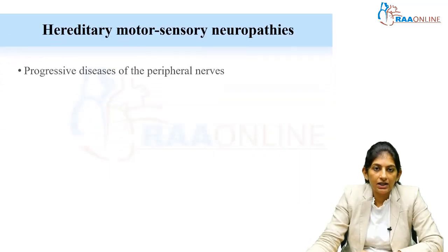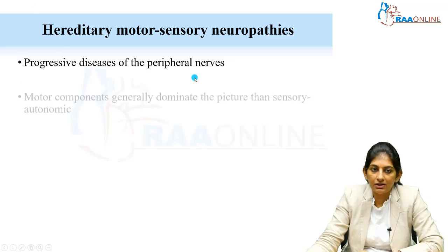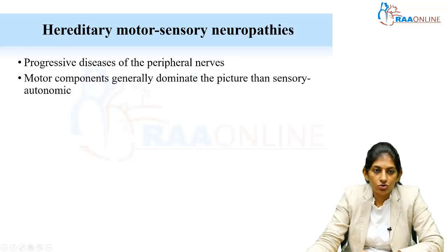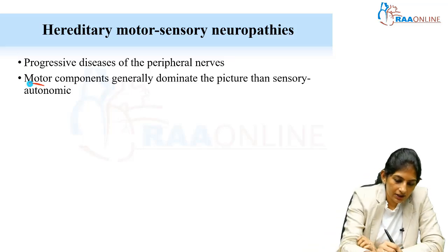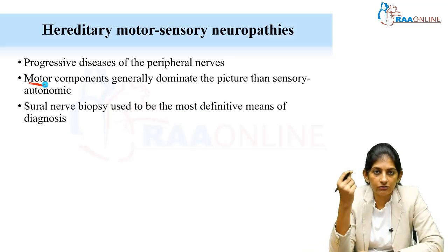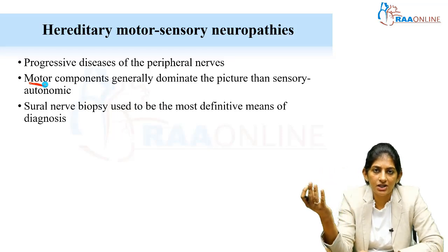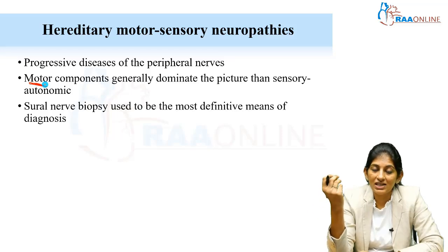First we will start with hereditary motor sensory neuropathies. Neuropathies are progressive diseases of the peripheral nerves. Most often the motor component will predominate, although there can be sensory and autonomic involvement. Previously, sural nerve biopsy used to be the most definitive means of diagnosis, but now with the advancements of genetic diagnosis, nerve biopsy is not done much.